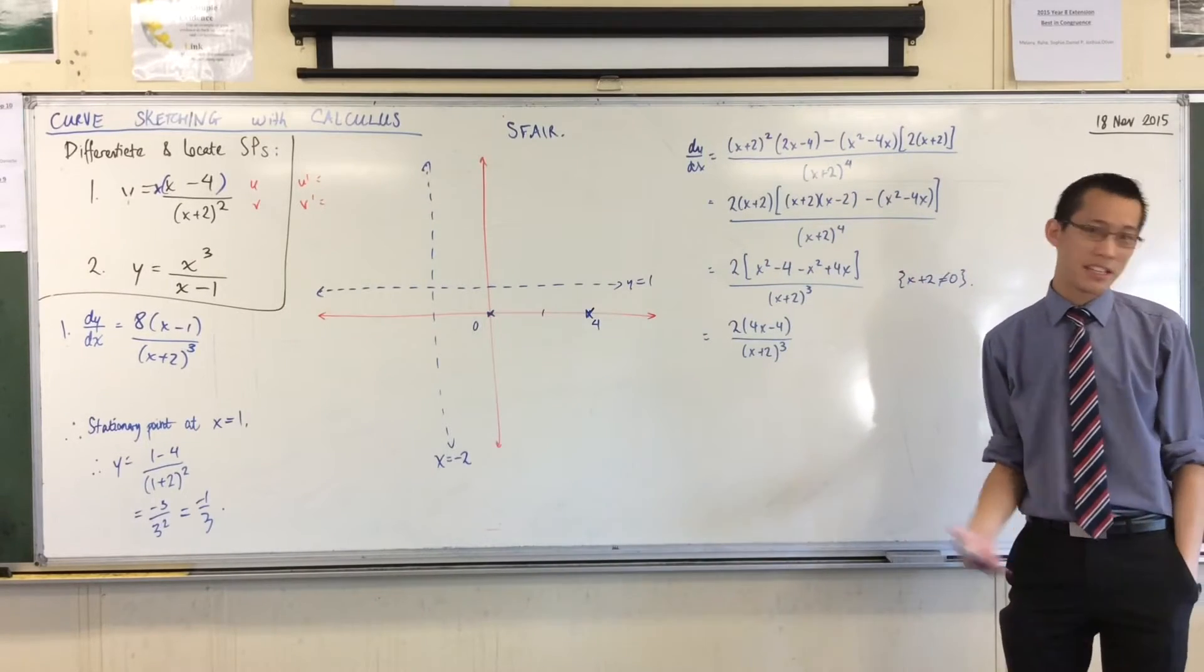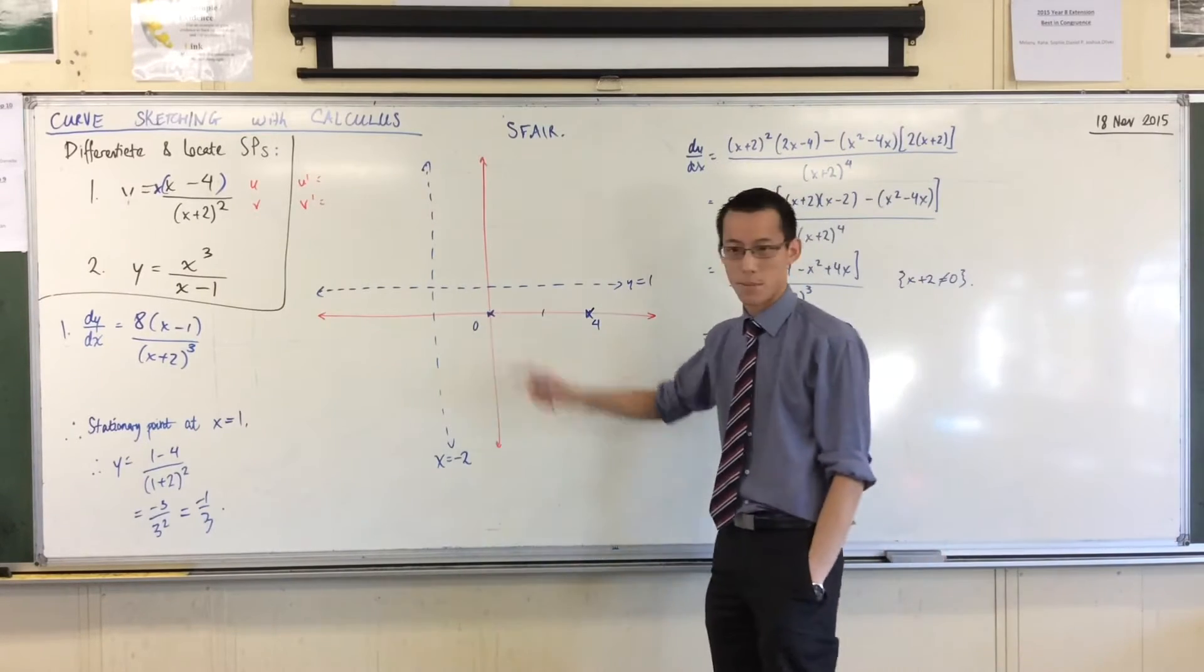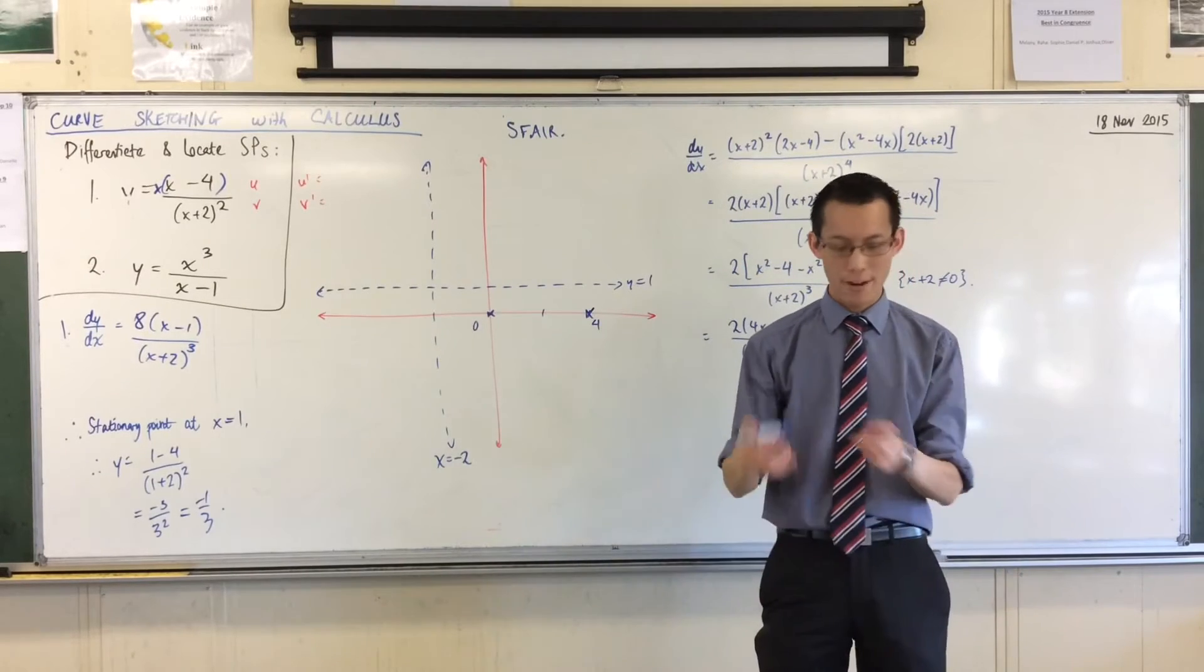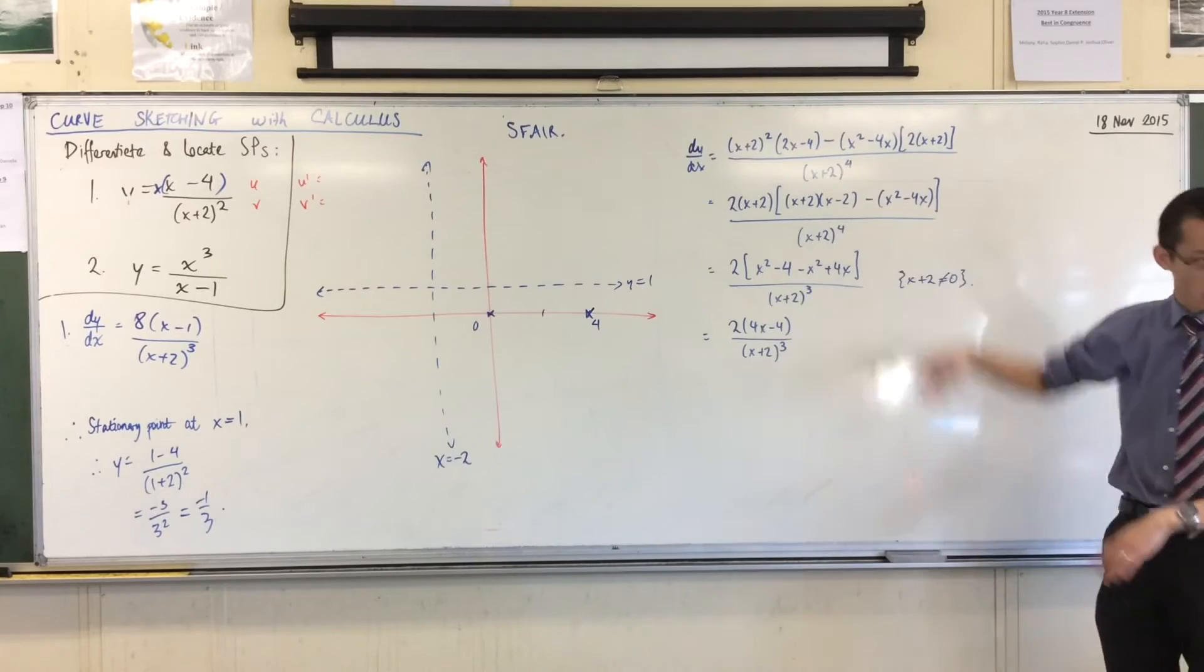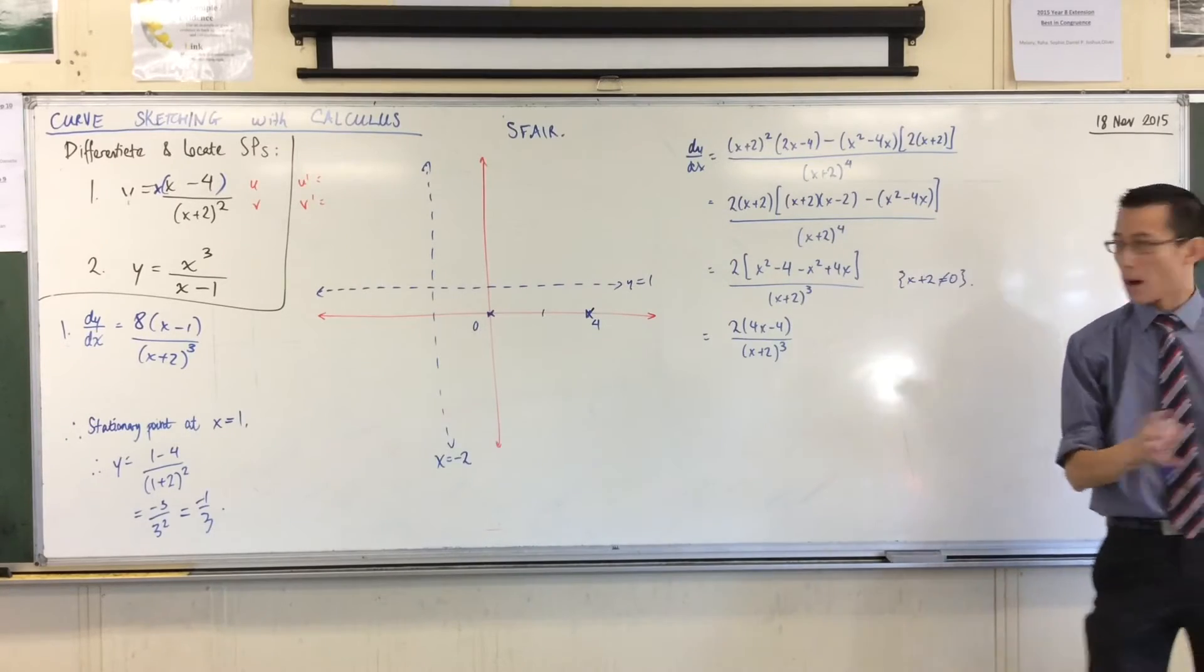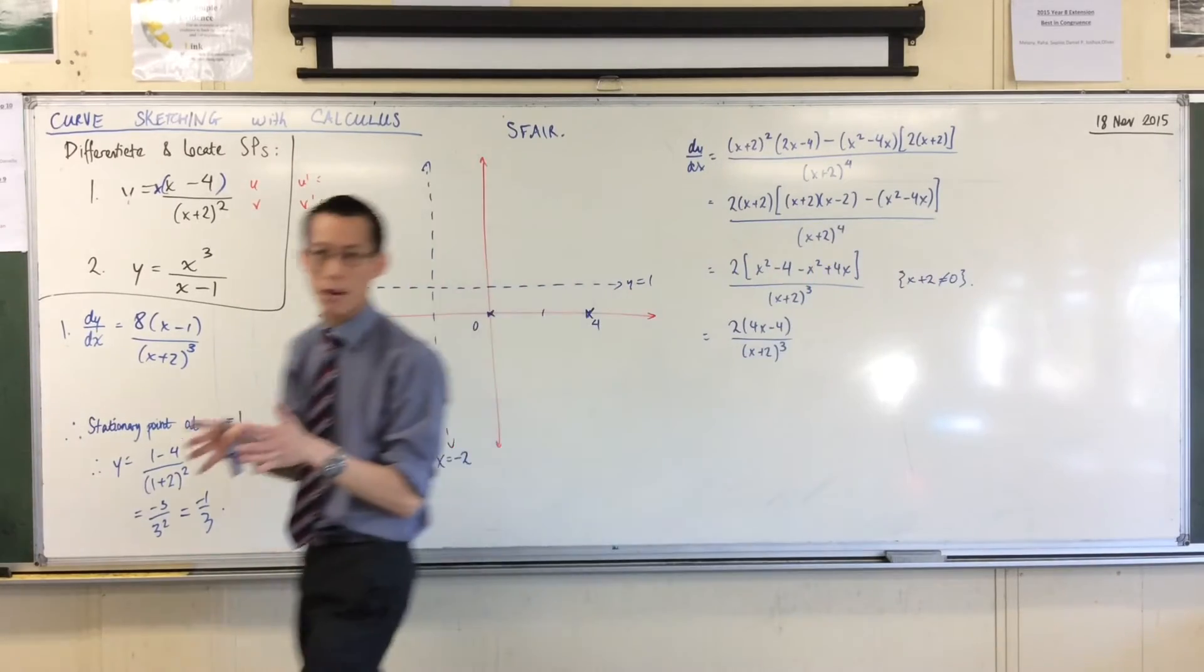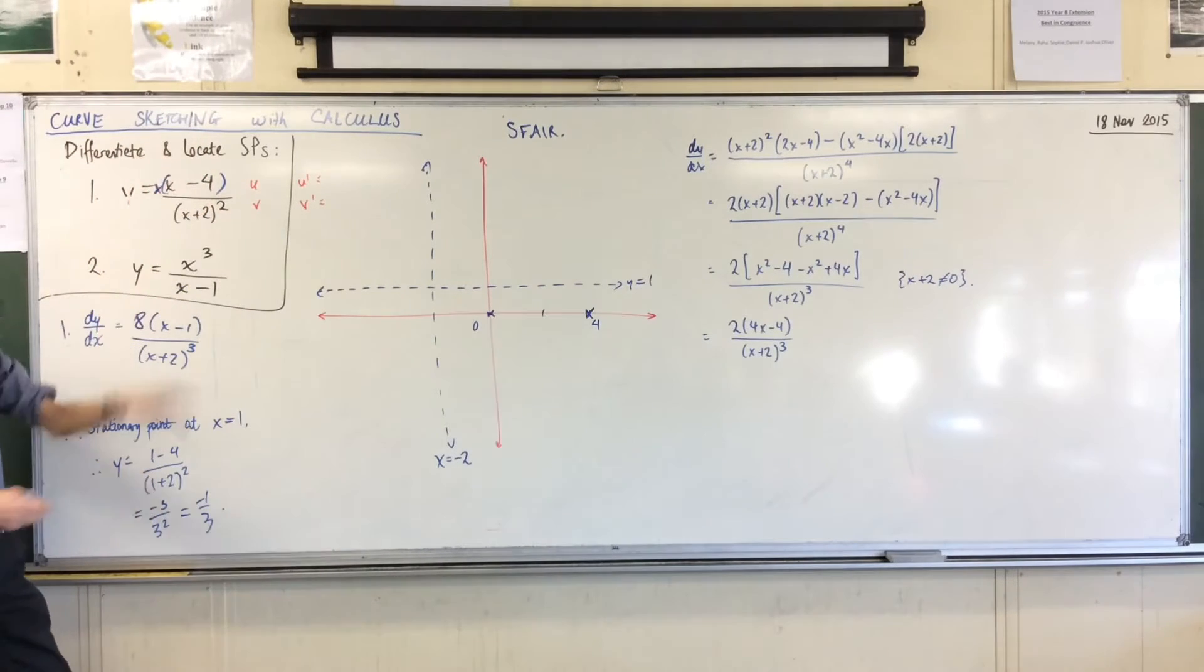Done my intercepts. I didn't have to worry about my intercepts because I found them already. Regions. Okay, regions. Now you can do this, again, in a quick way, or in a slower way, right? Remember, the things that I'm using to get my regions are these factors up here. They're the factors, okay?